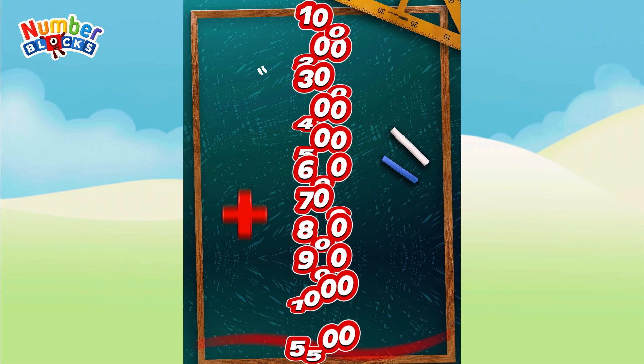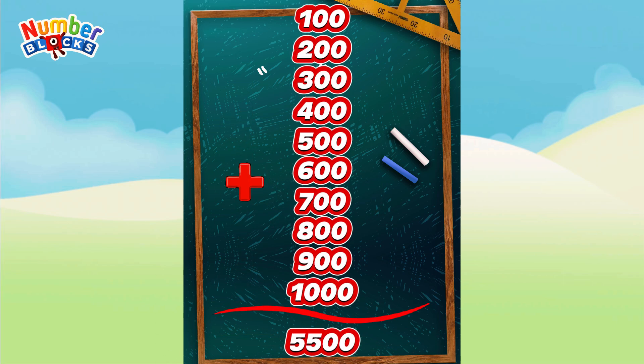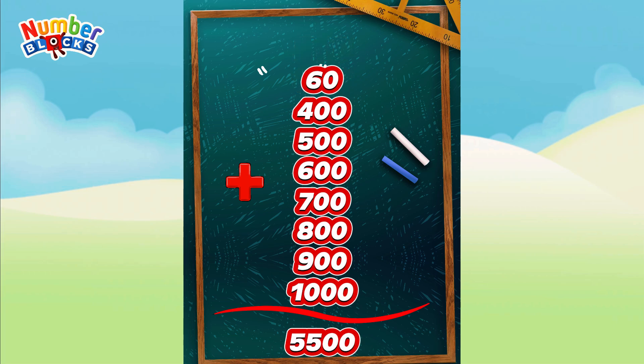And lastly, let's add the following numbers. 100 plus 200 is equal to 300. 300 plus 300 is equal to 600. 600 plus 400 is equal to 1,000.